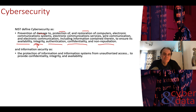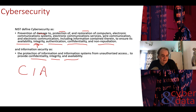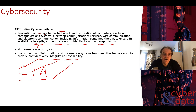We can also define information security as the protection of information and information systems from unauthorized access. Confidentiality, Integrity, and Availability — CIA — are the three core tenets of information security.